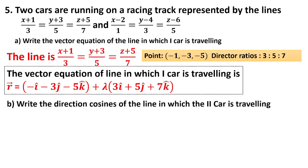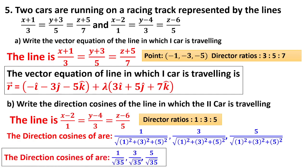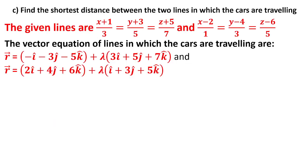Find the direction cosines of the line in which the second car is traveling. For the second car, it is in standard form. Therefore the direction ratios are 1, 3, 5. I can find the direction cosines as 1/√(1²+3²+5²), 3/√(1²+3²+5²), 5/√(1²+3²+5²). The direction cosines are found.